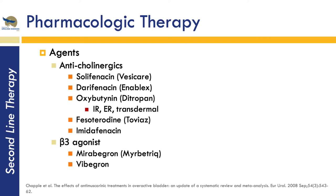The mainstay of pharmacological therapy is anti-cholinergics, or anti-muscarinics, and there are quite a few on the market that we use fairly often. The main ones are oxybutynin — with immediate release, extended release, and transdermal formulations — as well as tolterodine, solifenacin, darifenacin, and fesoterodine on the market.